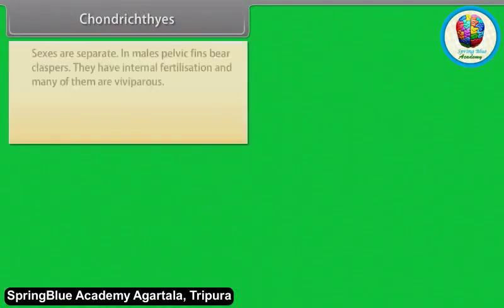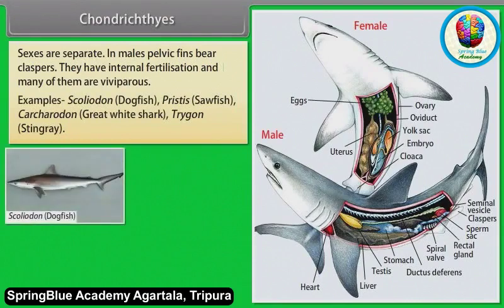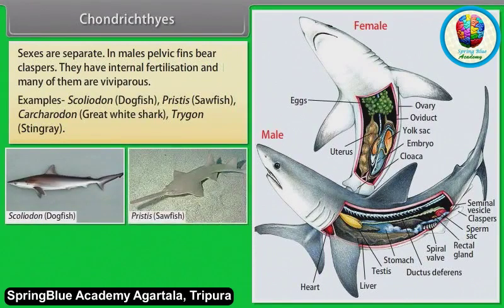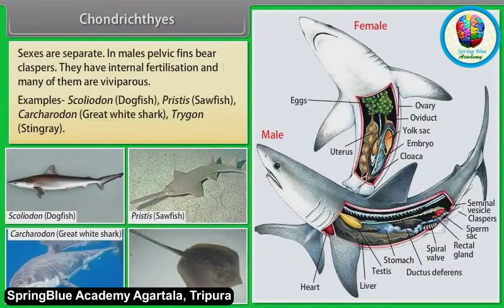Sexes are separate. In males, pelvic fins bear claspers. They have internal fertilization and many of them are viviparous. Examples: Scoliodon (Dogfish), Pristis (Sawfish), Carcharodon (Great White Shark), Trigon (Stingray).